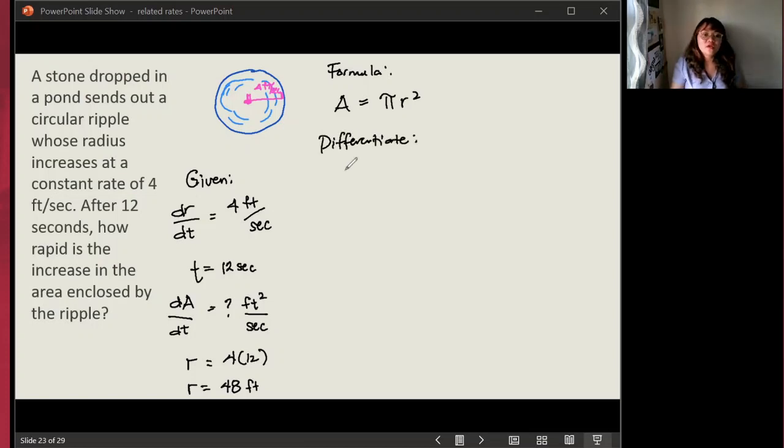Differentiate. So we have d over dt times the area. Pi will just remain as pi times d over dt r squared. Let's get the derivative. The derivative of A will just be 1. So that's dA over dt. And it's equal to pi. Let it be there. The derivative of r squared is going to be 2r. And here, this is dr over dt.